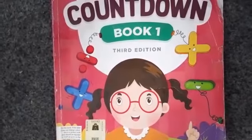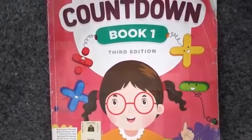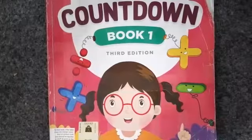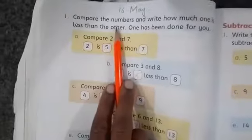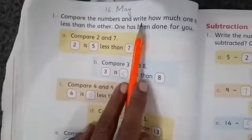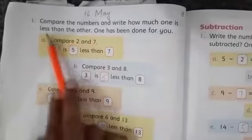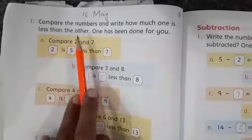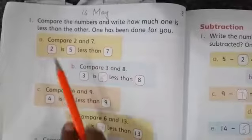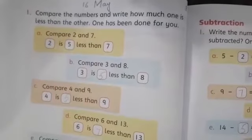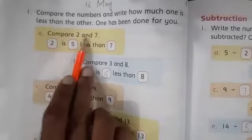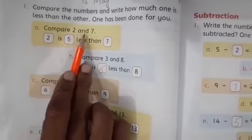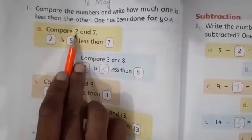Assalamualaikum level 1, how are you? Today we will start our Oxford New Countdown third edition page number 82. Our topic is compare the numbers and write how much one is less than the other. One has been done for you. This is our subtraction, comparing numbers. Compare 2 and 7, sorry, here we will start.